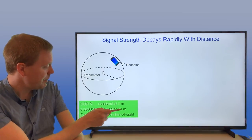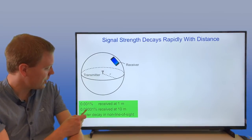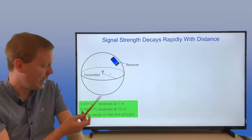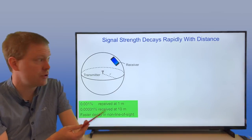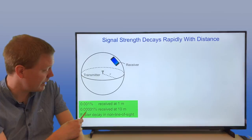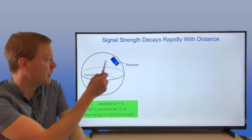At a 10 meter distance it's 0.001 0.001%. These computations are assuming a certain frequency range and that we have line of sight between these points.